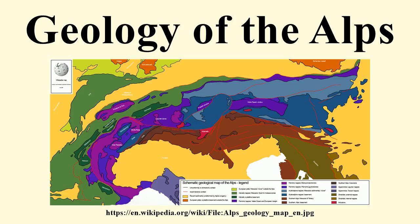The Alps continue fairly smoothly into the following related alpine mountain ranges: the Apennines to the southwest, the Dinarides to the southeast, and the Carpathians to the northeast. In the east the Alps are bounded by the Viennese Basin and the Pannonian Basin, where east-west stretching of the crust takes place.